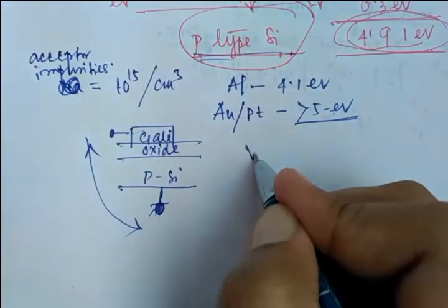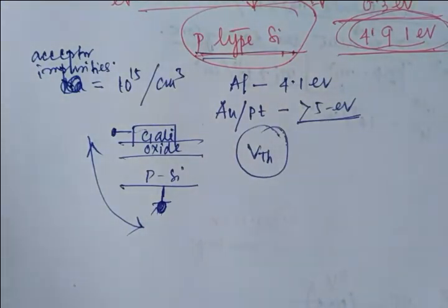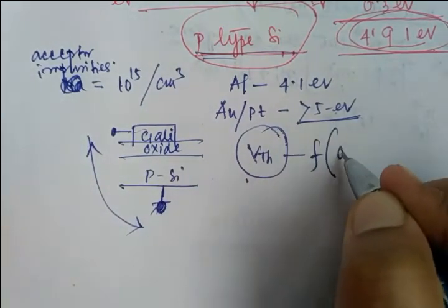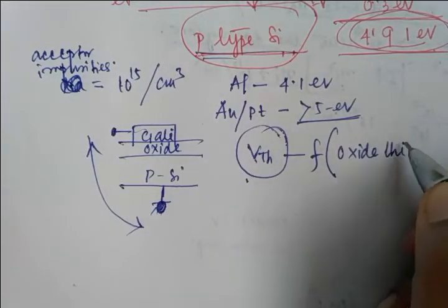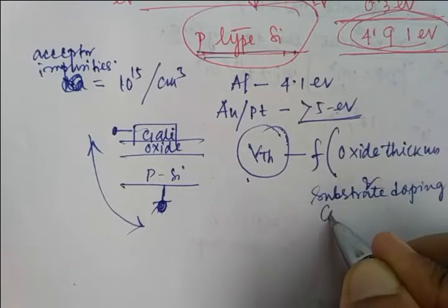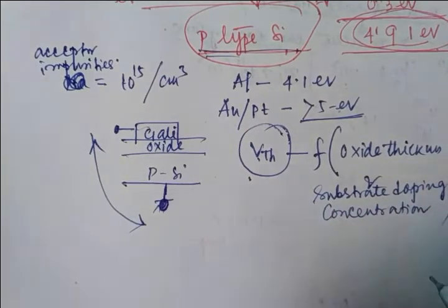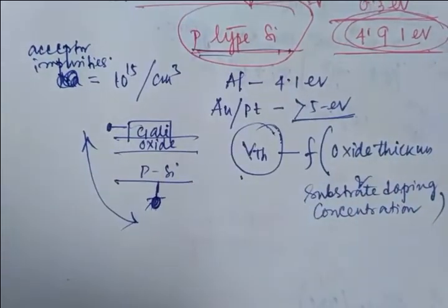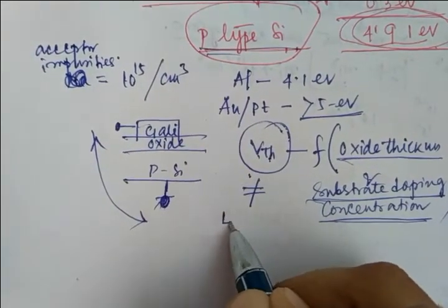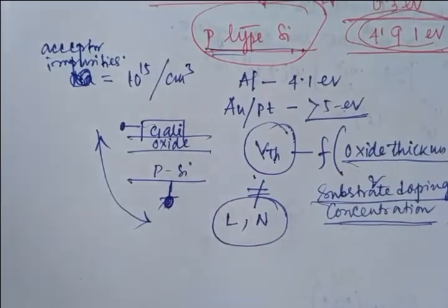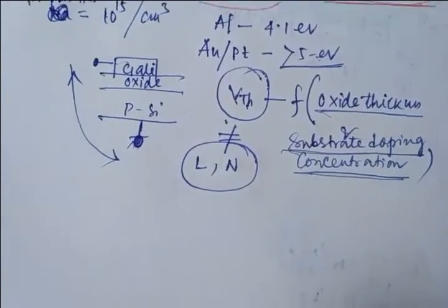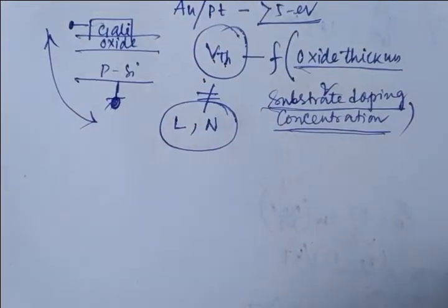An important point to keep in mind: the threshold voltage Vth is a function of oxide thickness and substrate doping concentration. It is not dependent on the length or width of the transistor. This knowledge is important for understanding the challenges of scaling.